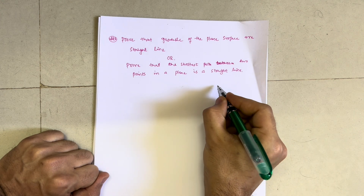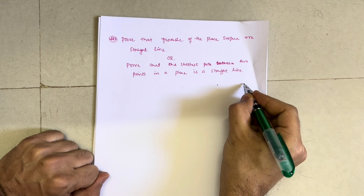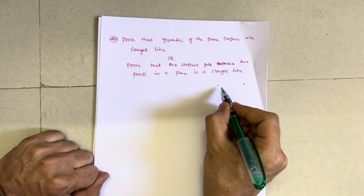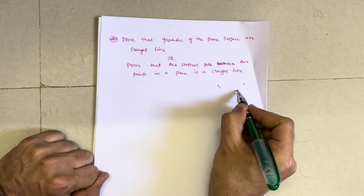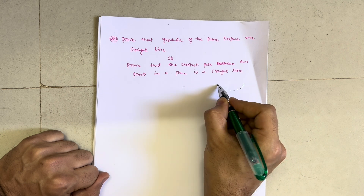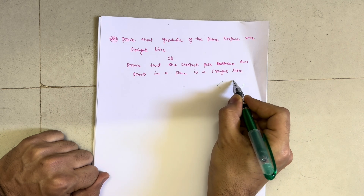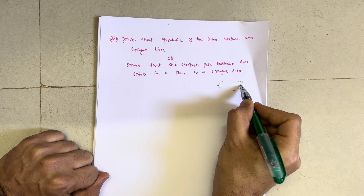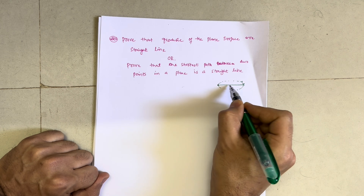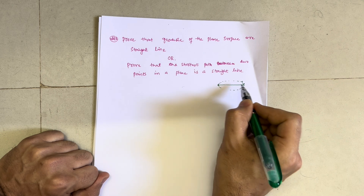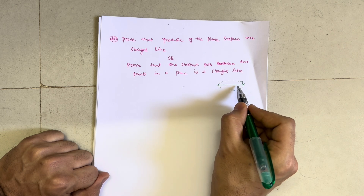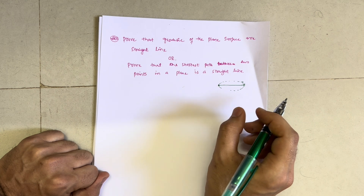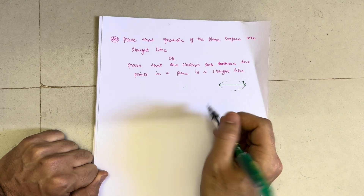First of all, let me give you some idea of what geodesic means. Suppose you have two points and you have to find the shortest distance you can travel between them. You can approach in many ways — going this way, or that way — but the shortest distance is the geodesic. So we have to prove that this shortest path is a straight line.